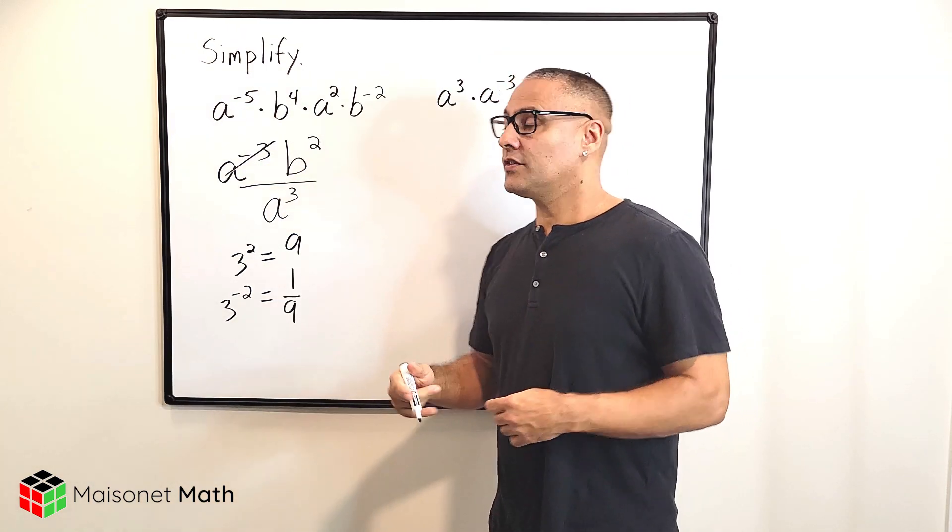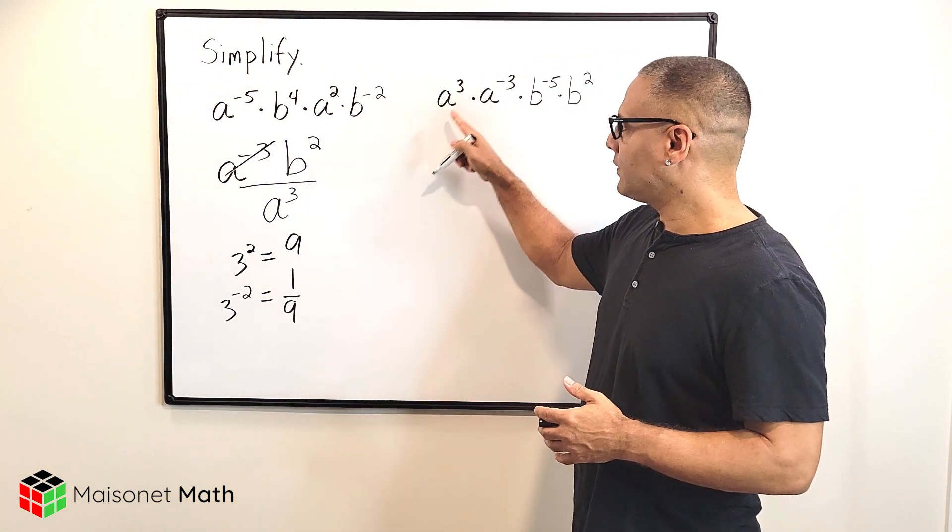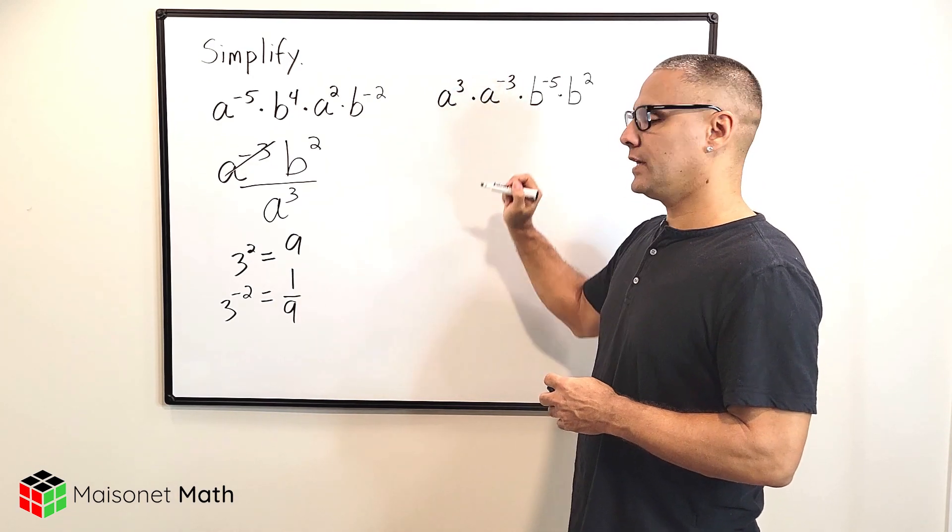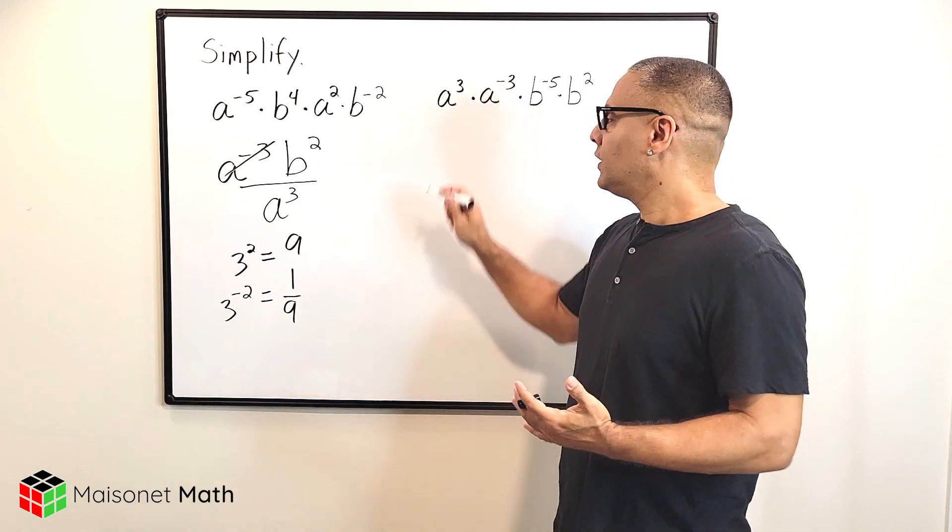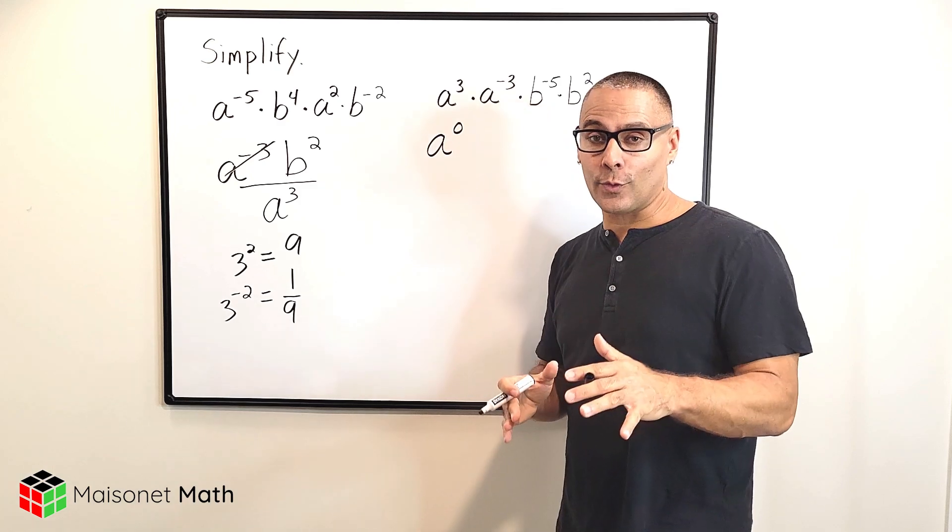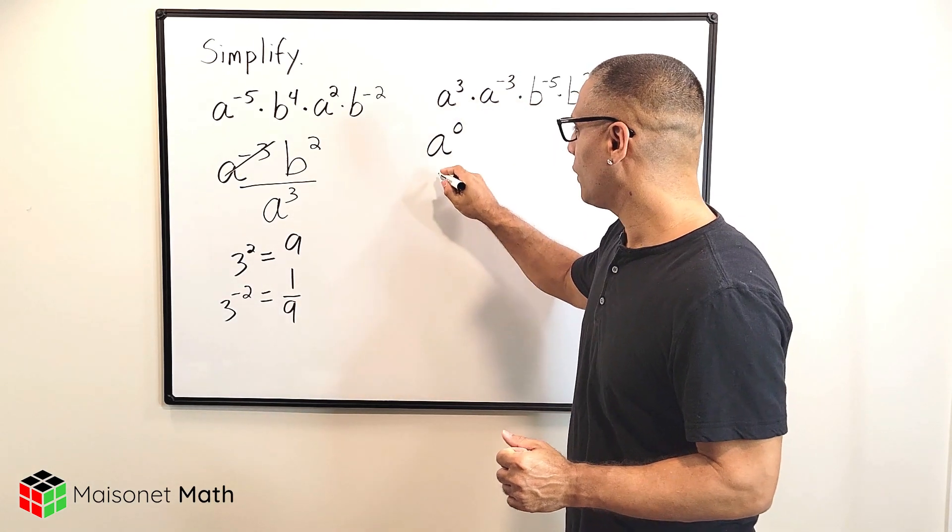All right, let's take a look at this expression right here. So we have a to the third times a to the negative third. So if we add three and negative three, what we would have is zero. So we have a to the zero power. Now remember, anything to the zero power is always equal to one.